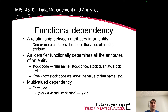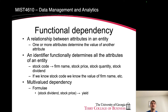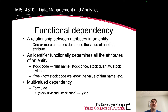We ideally want the primary key to determine each of our attributes. In some cases, we may have an attribute inside of an entity that's determined by another attribute inside of that entity that's not the primary key. We'll show examples of that when we get into second and third normal forms. Whenever you have a non-key attribute determining another attribute inside of the entity, we refer to that as transitive dependency.